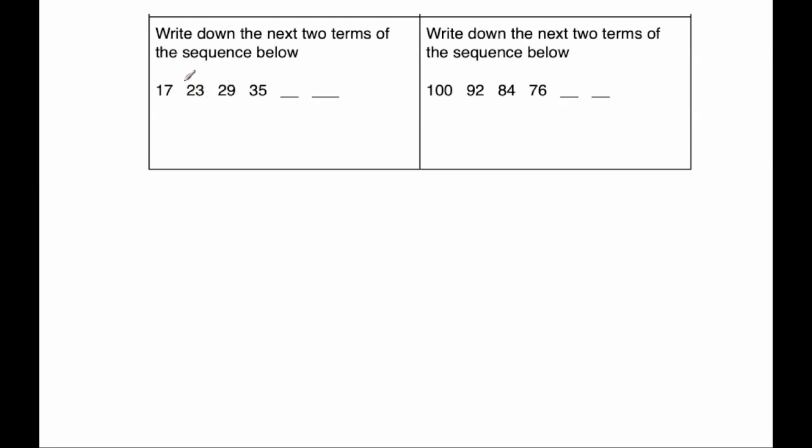Looking at 23 and 29, I think that's adding 6. Let's check: 17 plus 6 is 23, plus 6 is 29, plus 6 is 35. So we just need to keep adding 6's. 35 plus 6 equals 41, add another 6 equals 47. So our missing numbers are 41 and 47.